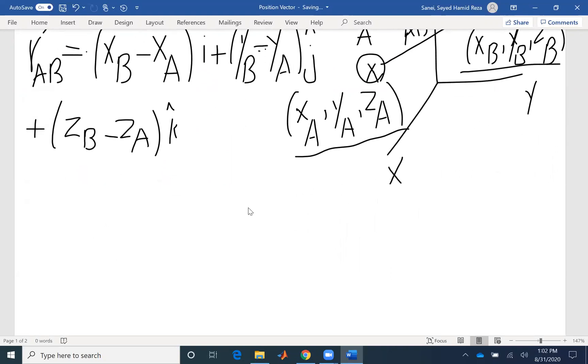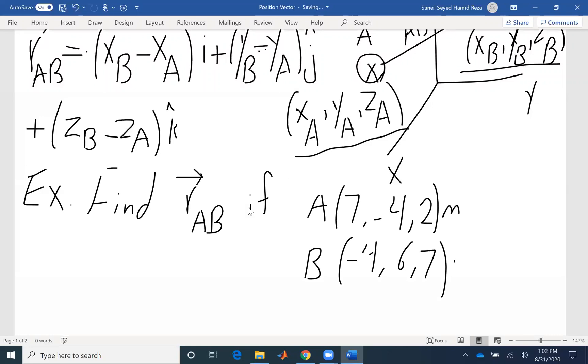For example, if you want to find, let's solve an example. If you want to find the position vector RAB, if the coordinate of A, let's have a numerical example, would be (7, -4, 2) meters, and B would be (-4, 6, 7) meters.